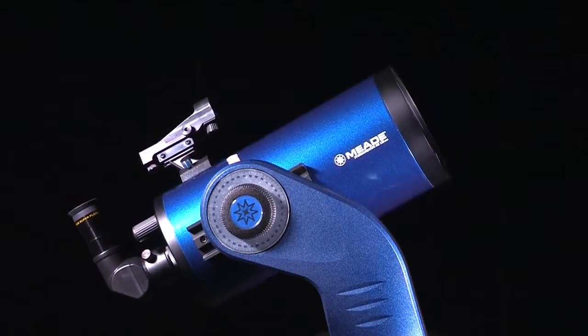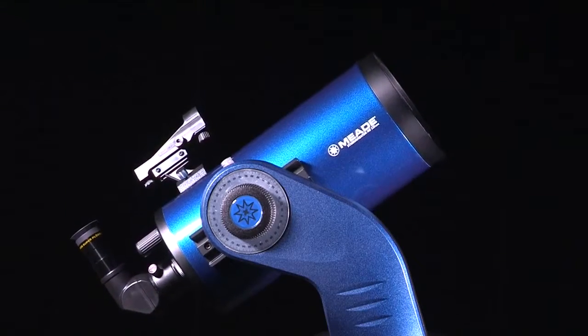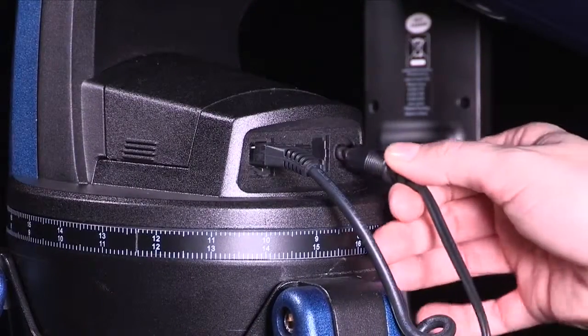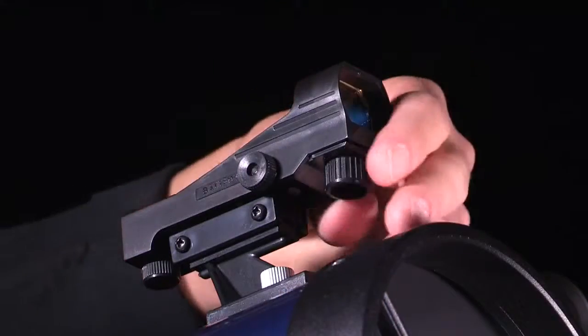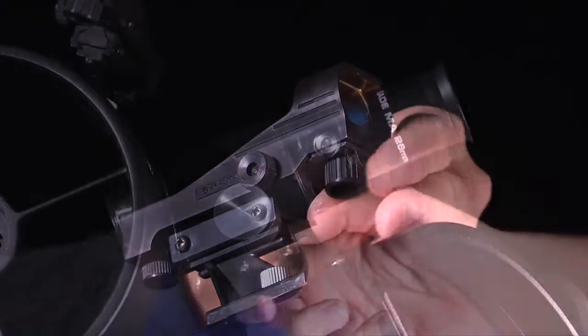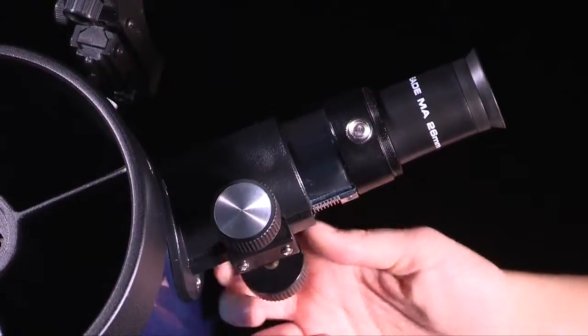Aside from the AudioStar hand controller, the Star Navigator NG includes a durable frame and full height adjustable aluminum tripod, external power connector for AC or DC operation, a red dot finder to easily align the telescope, and two eyepieces for low and high power viewing.